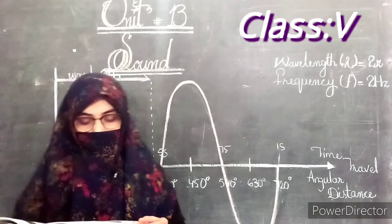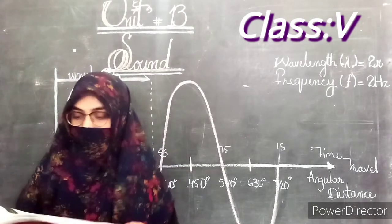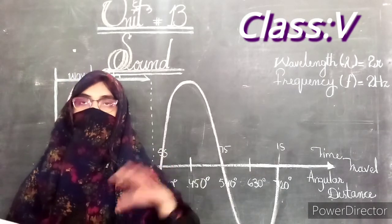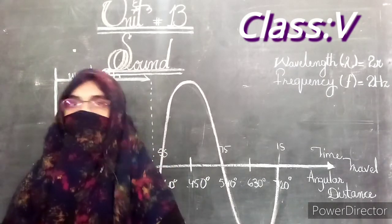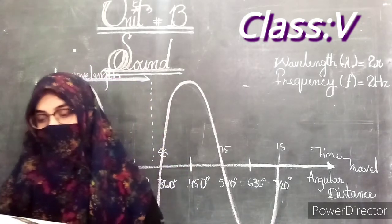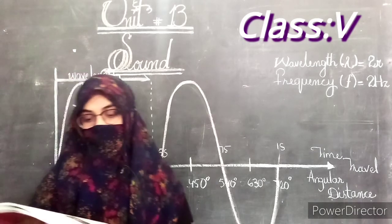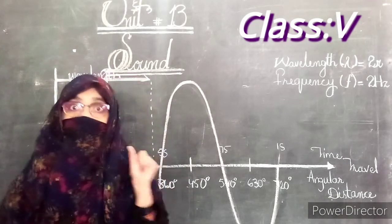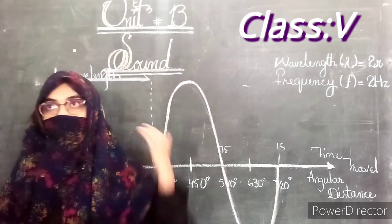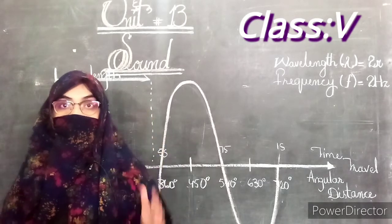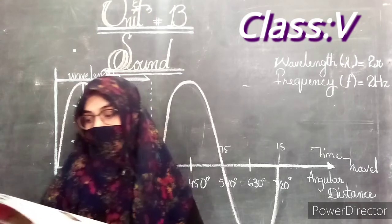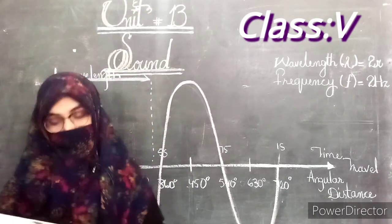Sound travels at different speeds through different materials. Sound which travels through different objects travels with different speeds. It travels faster through solids like wood or steel than it does through air.